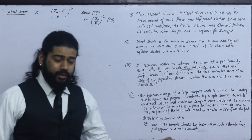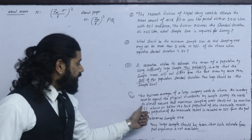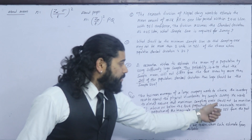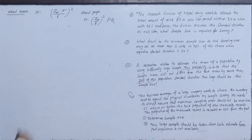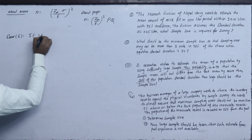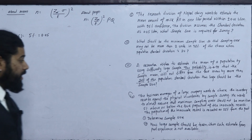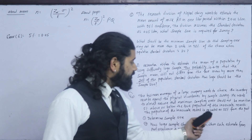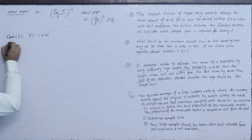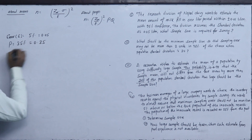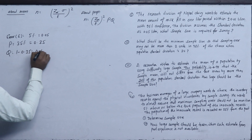Question 4 is about proportion. The business manager of a large company wants to check inventory records by sampling survey. He wants to ensure the maximum sampling error is not more than 5% above or below the true population proportion. So e = 0.05. From past experience, the proportion of inaccurate records P = 0.35, so Q = 1 - 0.35 = 0.65.